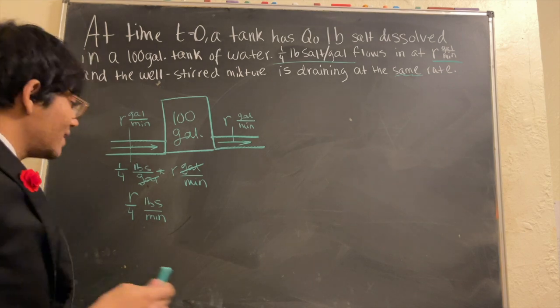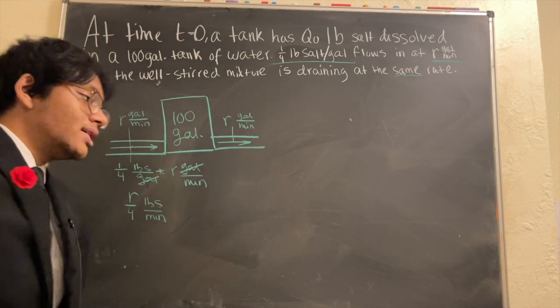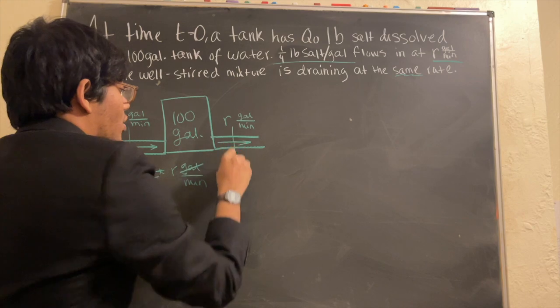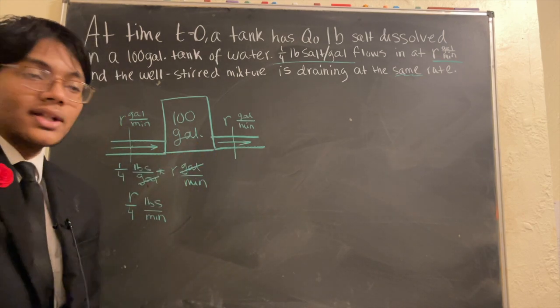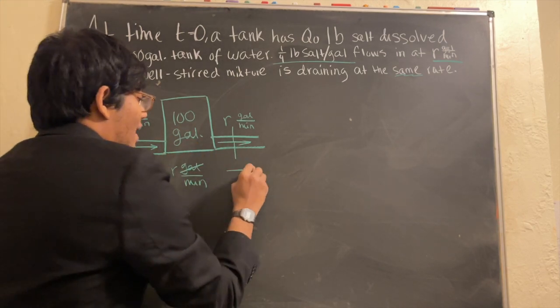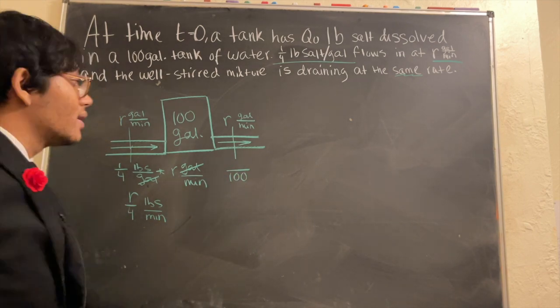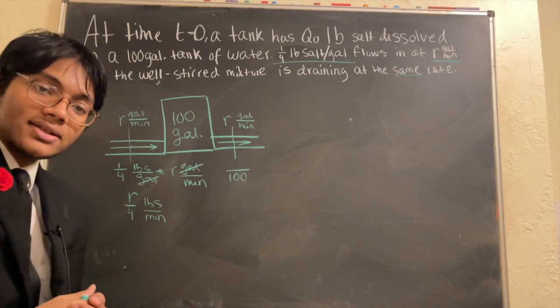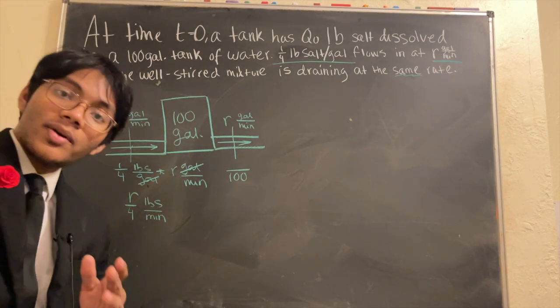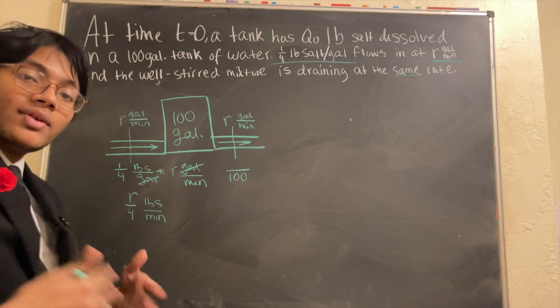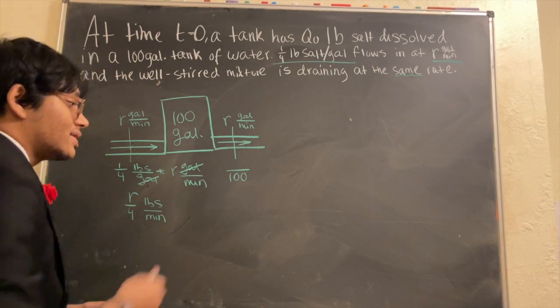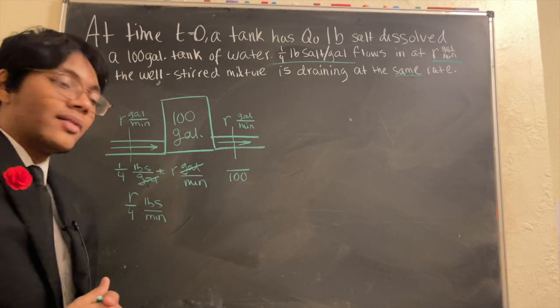And so, what is the concentration of the outgoing gas or the outgoing liquid? Well, first of all, the denominator we know is going to stay 100. Why is that? Well, the water tank starts at 100 gallons and you're pumping in as much as you're pumping out. So there is no net change in the volume of the system. Hence, the denominator being 100.